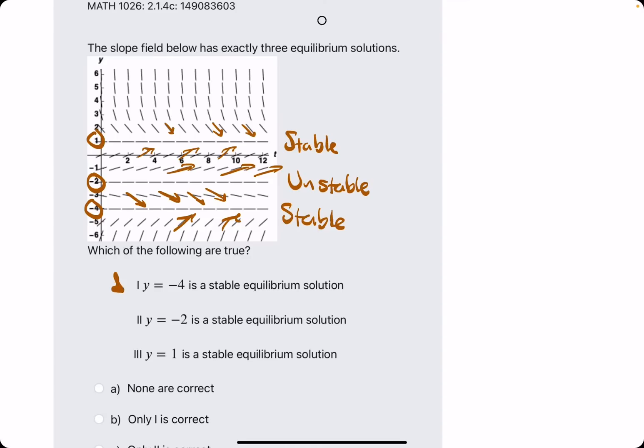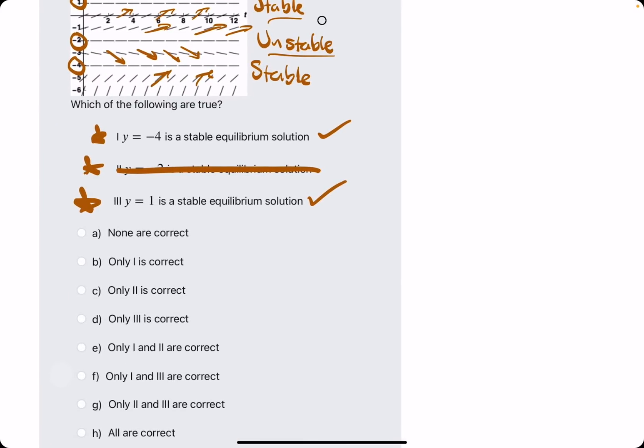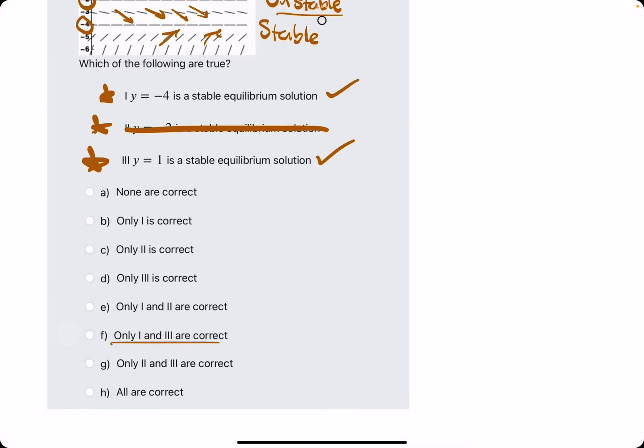Which of the following are true? Number 1, y equals negative 4 is stable. That is what we said. That is true. Negative 2 is stable. That is false. We said unstable. Number 3, y equals 1 is stable. We did say stable for y equals 1. It looks like 1 and 3 are correct.